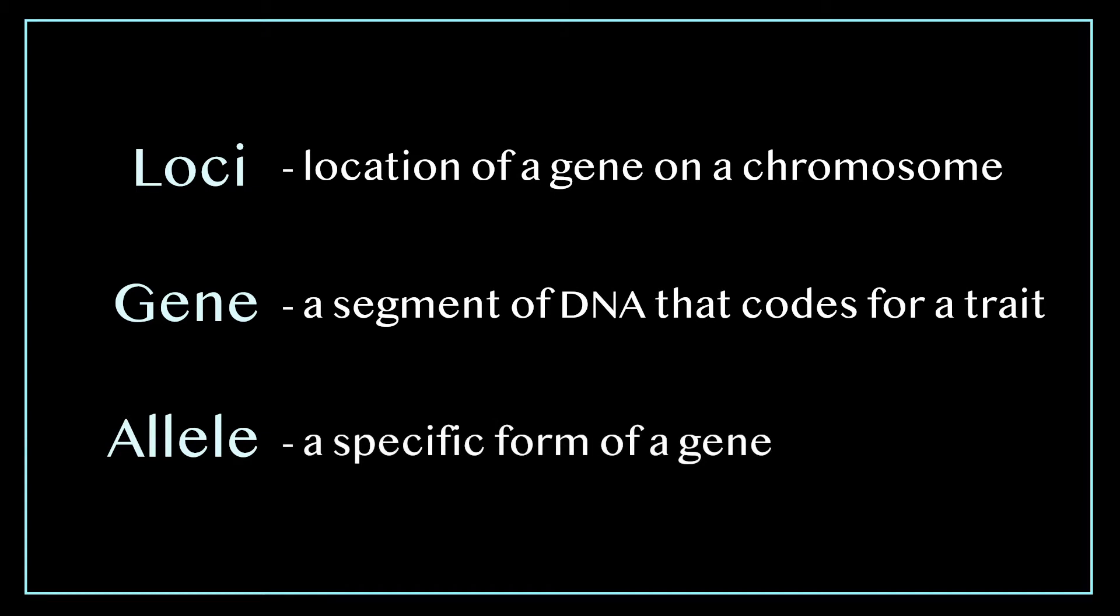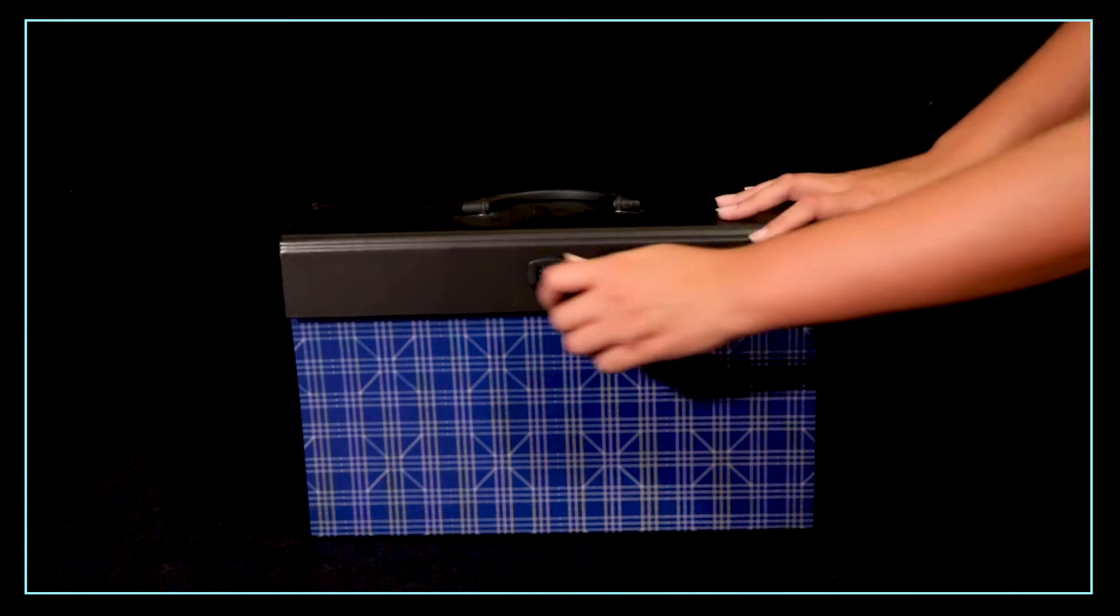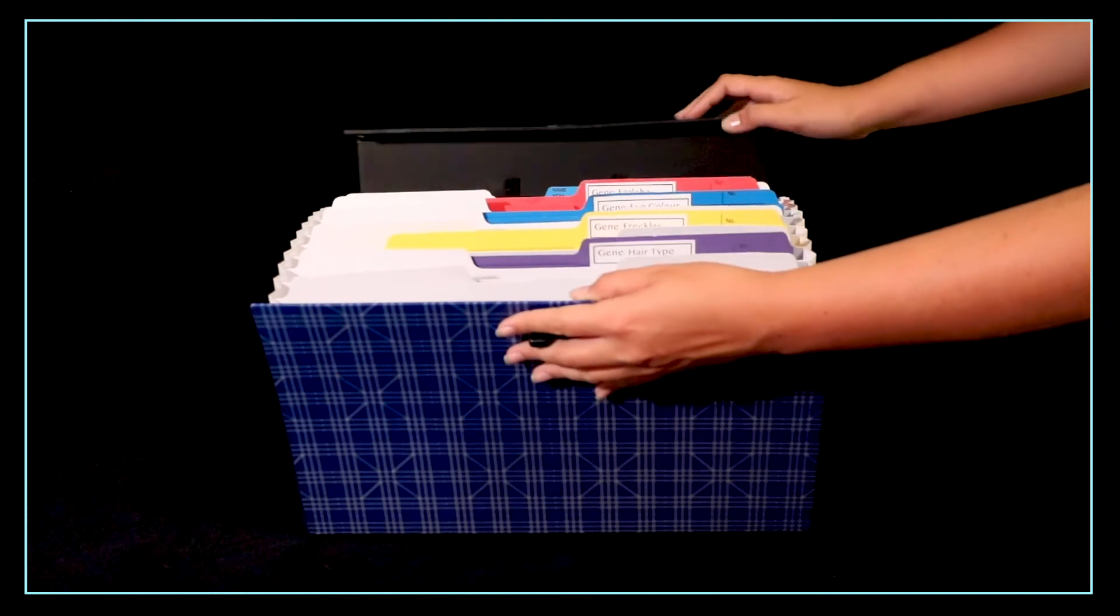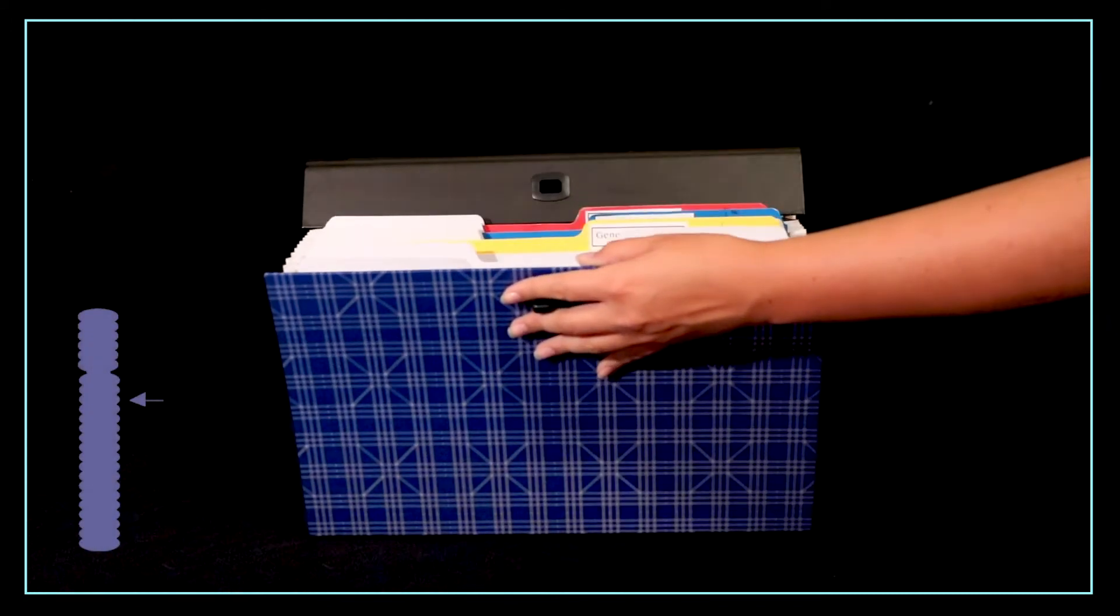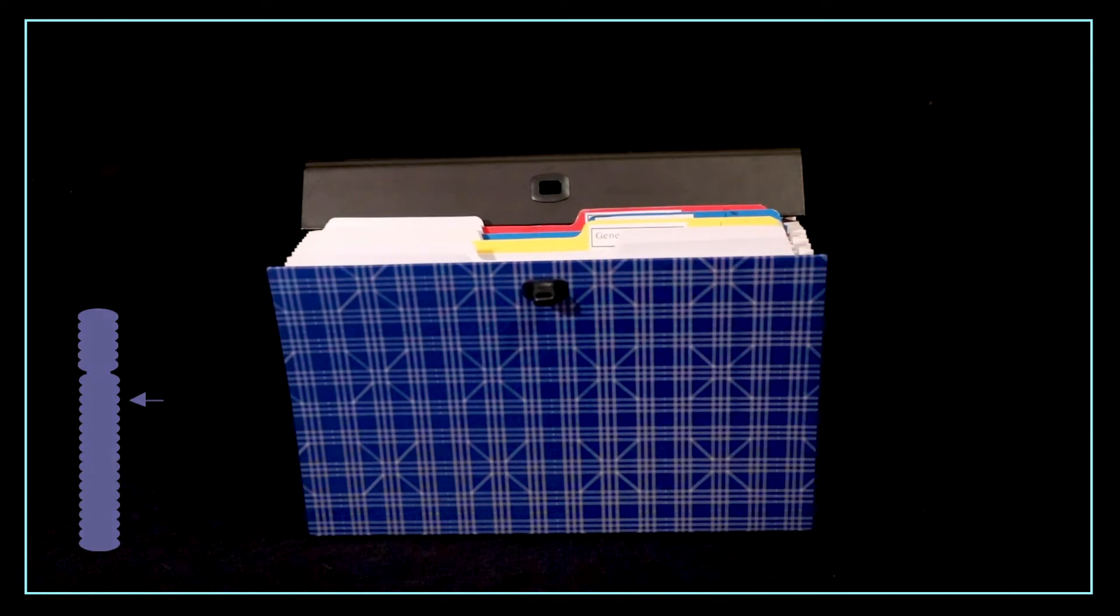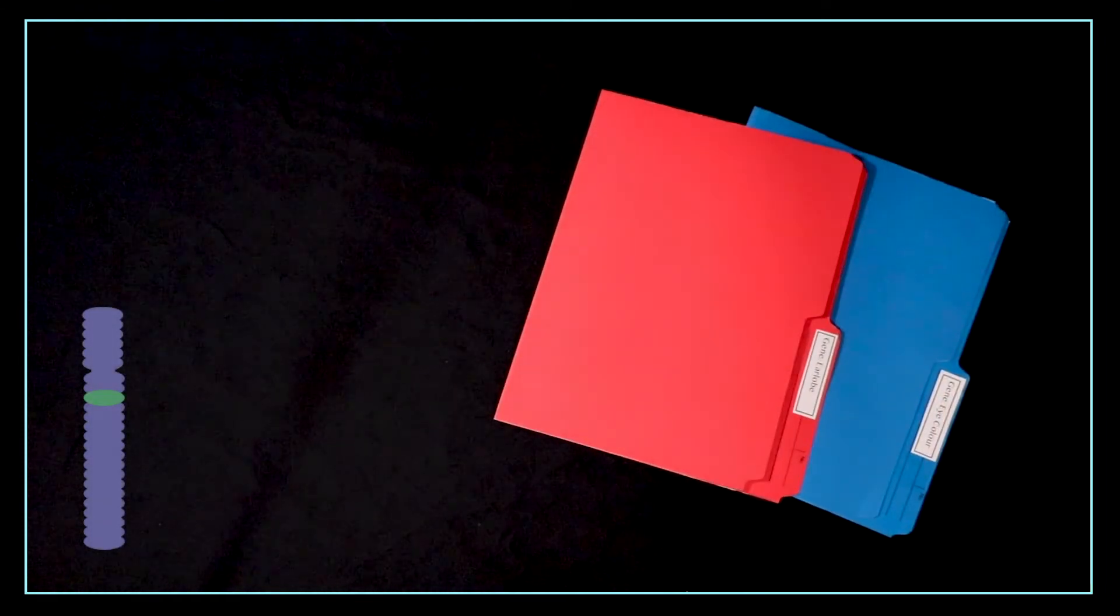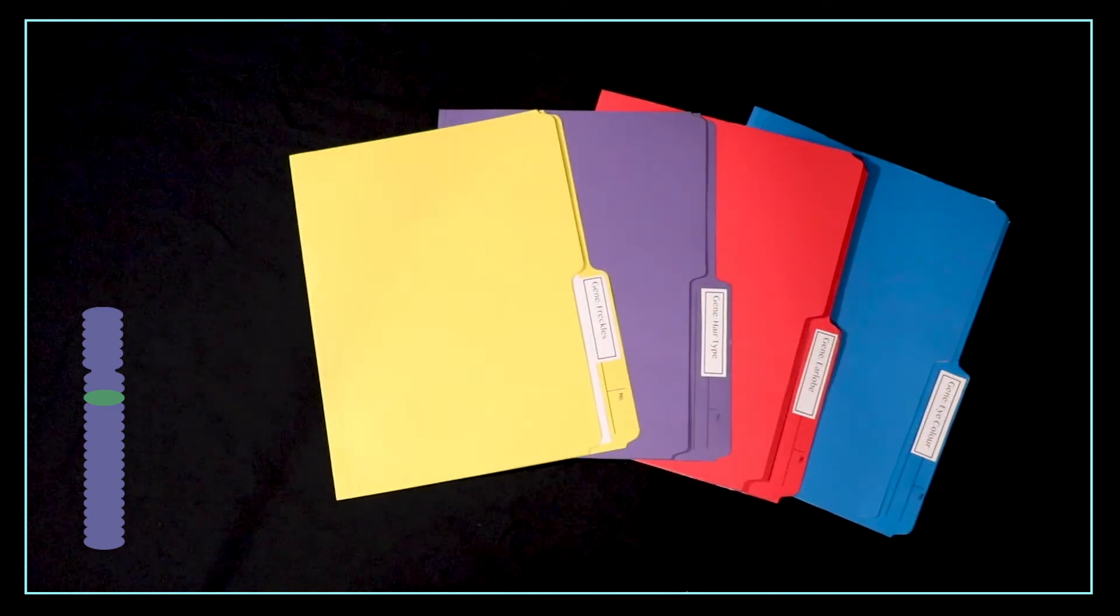Okay but what does that mean? Think of it like a filing cabinet. Your DNA is holding tons and tons of information and it all needs to be super organized. The loci is where the file is stored. It's always in the exact same place for members of the same species. You can imagine the gene as a folder. It's a specific chunk of DNA that holds the information for a trait. Every human has the same genes.